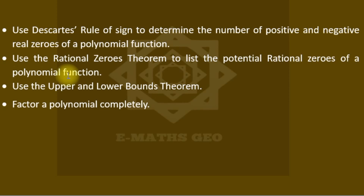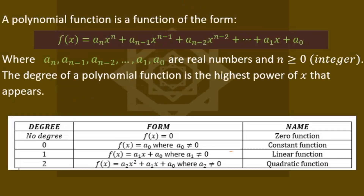We'll use Descartes' Rule of Signs to determine the number of positive and negative real zeros of a polynomial function, use the Rational Zero Theorem to list the potential rational zeros of a polynomial function, and use the upper and lower bounds theorem and factor a polynomial completely. Now let's look at the first topic.